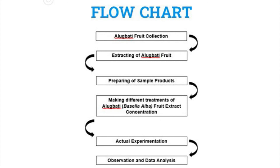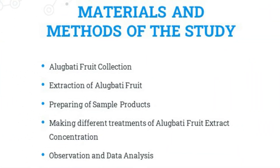This is the flowchart showing the process made during the experimentation. First, we collected alugbati fruits from various places. The alugbati fruit extracts were extracted by putting the alugbati fruit in a sealed and enclosed plastic. The researchers used a heavy object to smash the fruits until the juice was extracted. The alugbati fruit extract was drained and put in a clean plastic cup. The researchers brought different materials to be used as dependent variables: vinegar, bleach, baking soda, lemon juice, mouthwash, and cola.